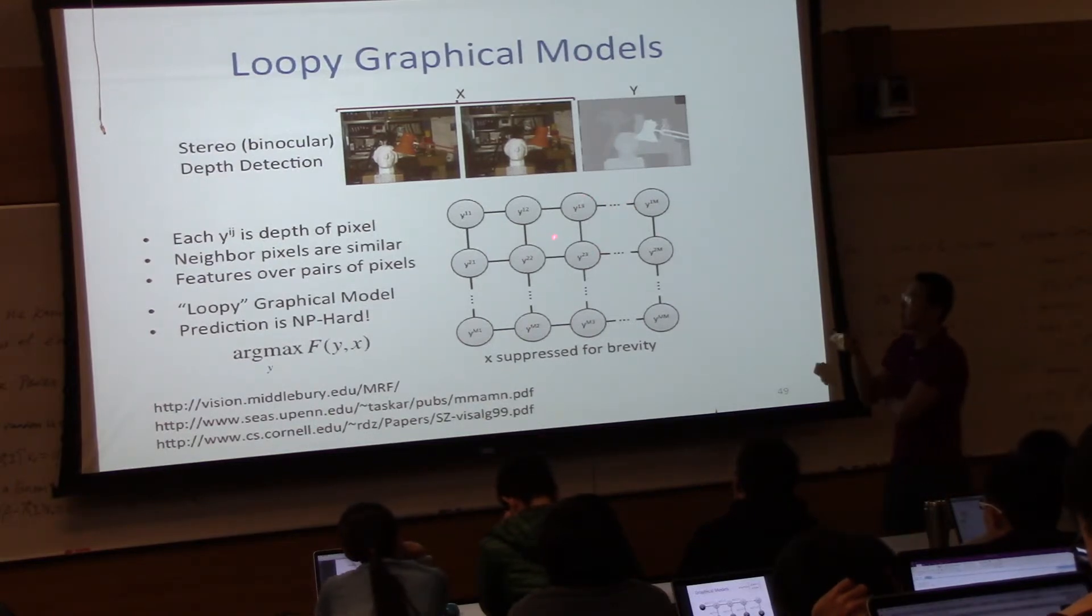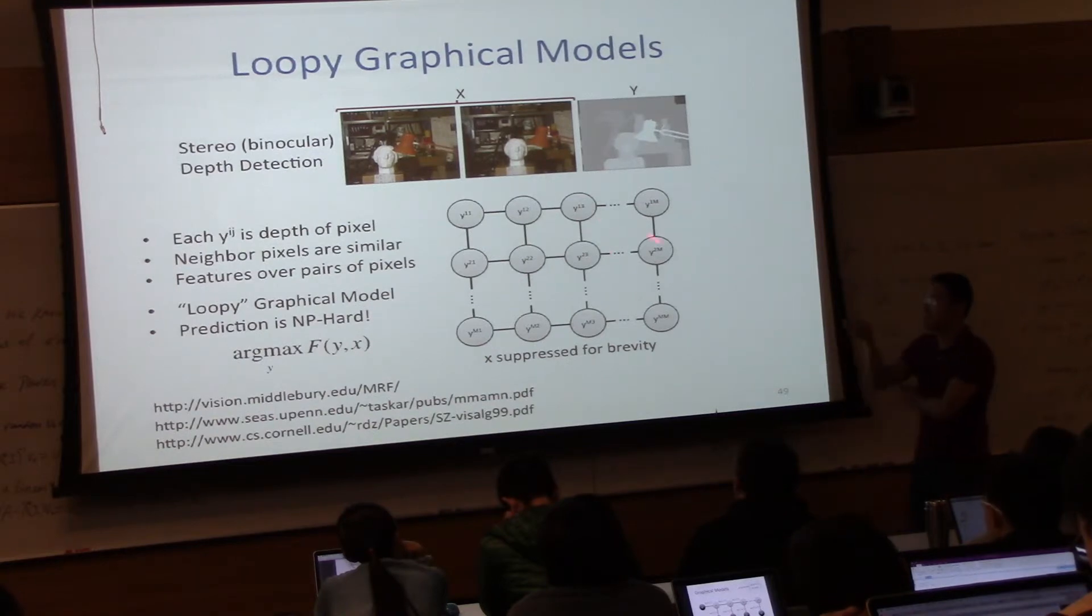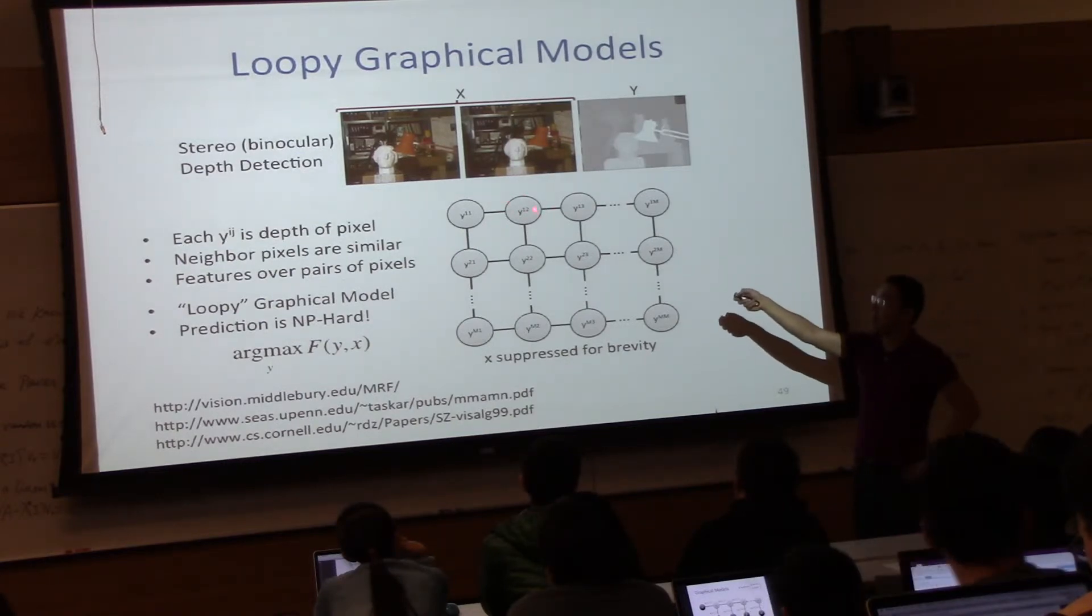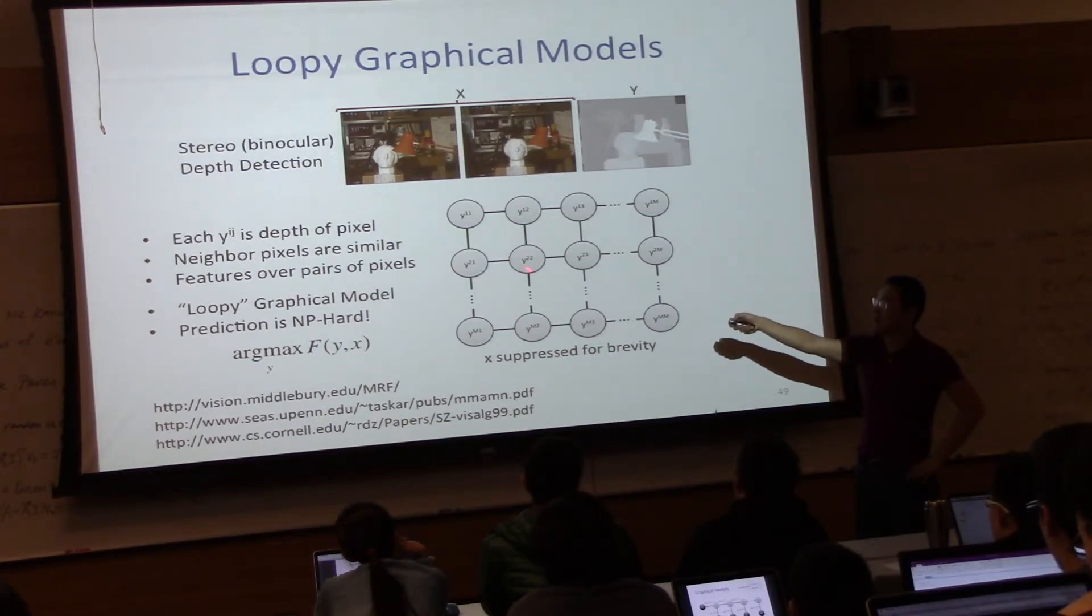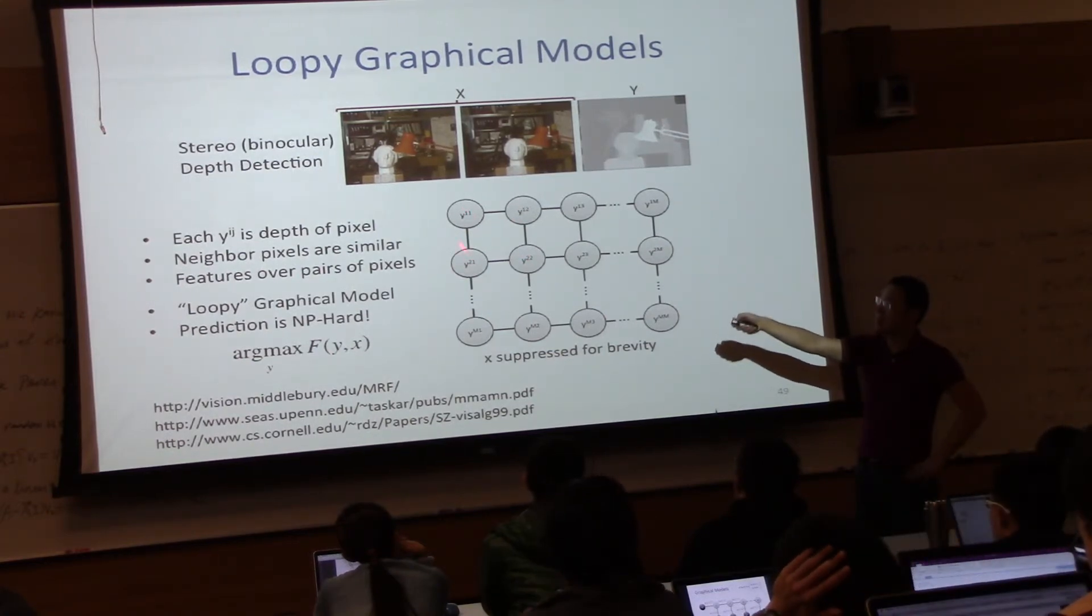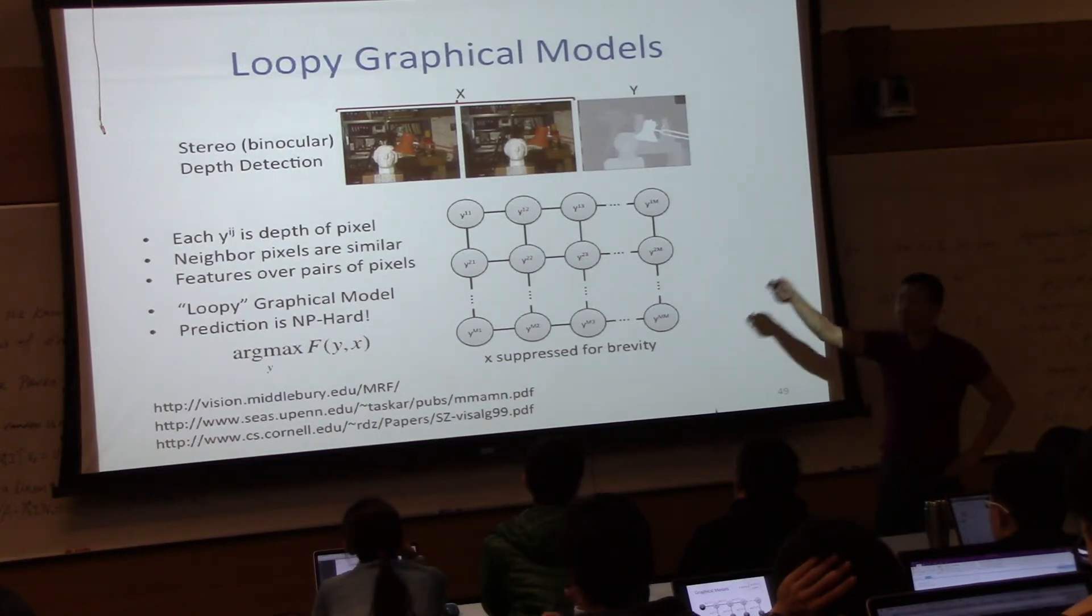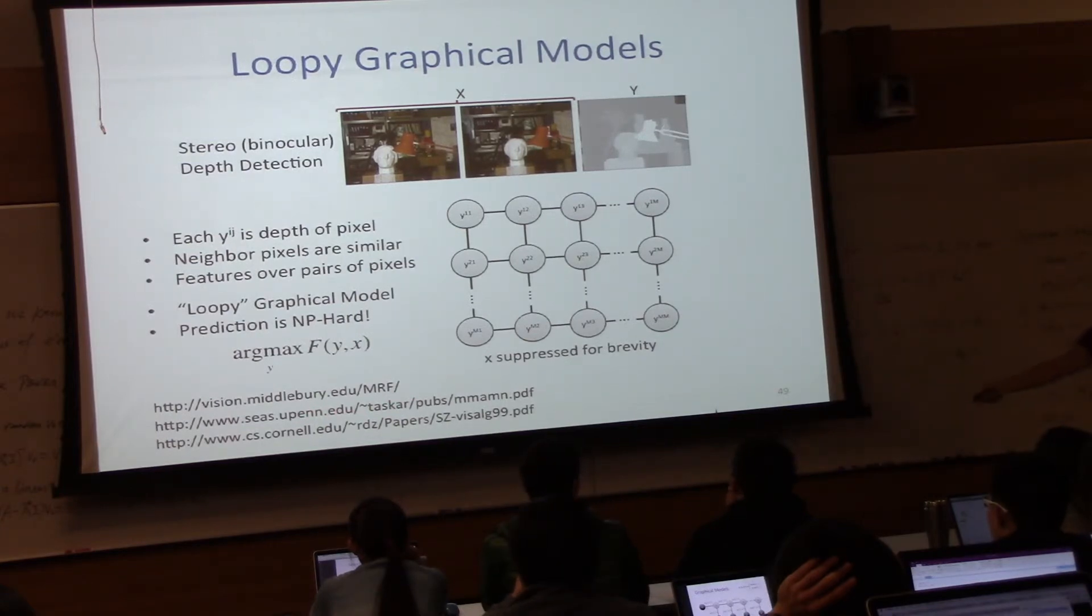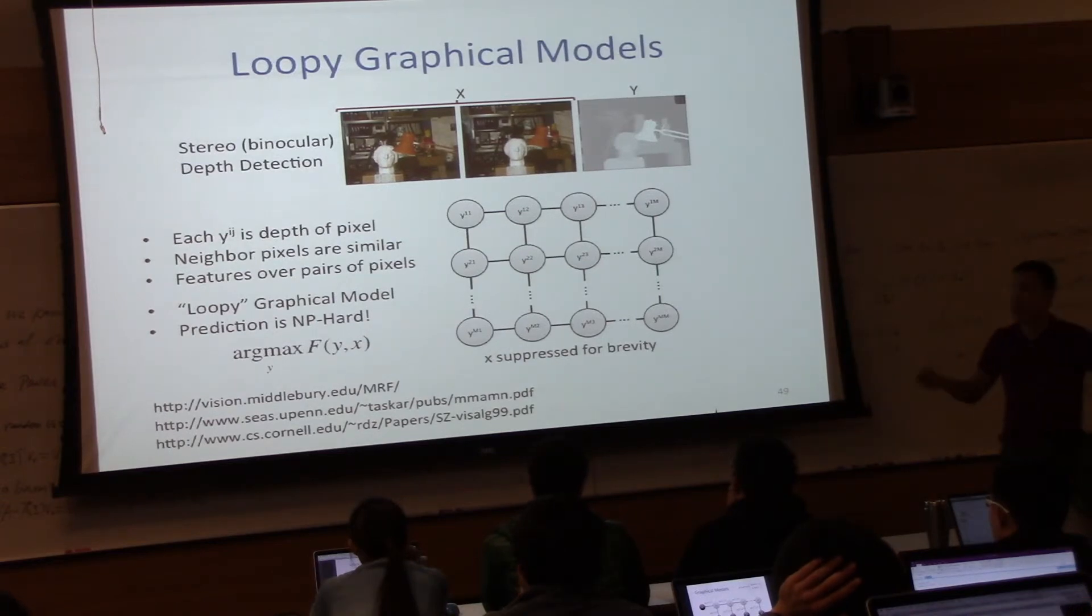And that also can be formulated as a linear model, linear scoring function over these features on pairs of pixels. The problem, of course, is that this is not an acyclic graph. There are cycles. So whatever you predict here, you can no longer fix because, let's say this guy, you decide to make this guy a partial solution depending on this guy. And this guy's a partial solution depending on this guy. This guy's a partial solution depending on this guy. Now this guy's a partial solution depending on this guy. Now you have a cycle. So it's NP-hard to actually find the maximizer. So this is a case where actually you cannot efficiently find the optimal solution. But people do this anyways. There are approximation algorithms that can solve this approximately.